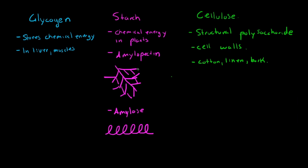The first type is glycogen. It stores chemical energy in animals, usually stored in the liver or muscles. It hangs out there until our cell needs energy, and then it will be used as an energy source.